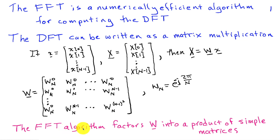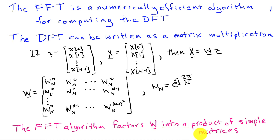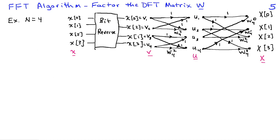The FFT algorithm factors this matrix W into a product of very simple matrices involving a lot of ones and zeros. Because these matrices end up being so simple, the algorithm is much more efficient to implement as a product of these simple matrices — in other words, a sequence of steps — rather than implementing it as one matrix multiplication.